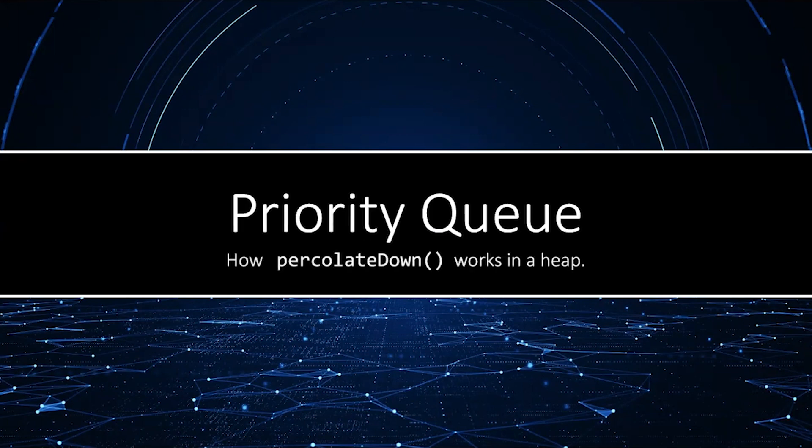Today we're going to learn how the percolate down method works. Hello, I'm James Helfrich. The priority queue is a data structure that makes sure that the topmost element is the greatest element in the collection.